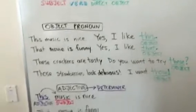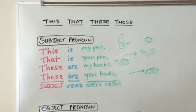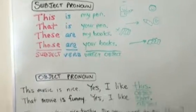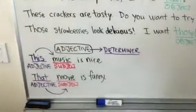So, we have these different ways of using this, that, these, those. Subject pronoun, object pronoun, or adjective.